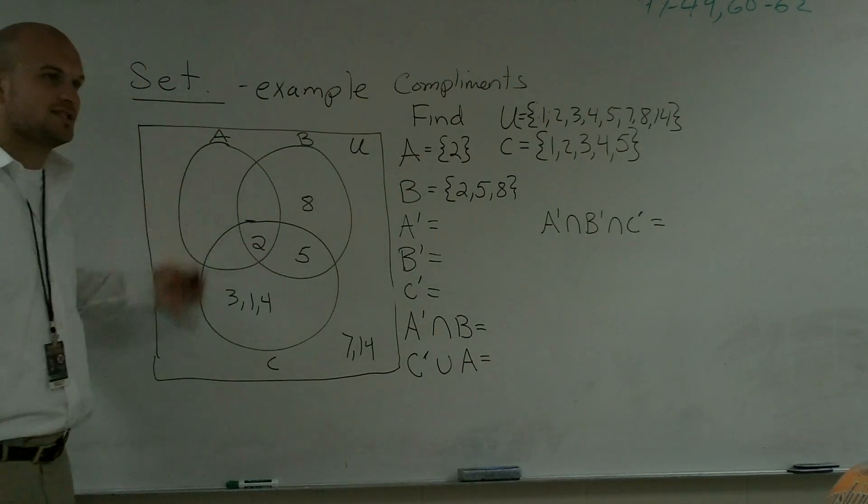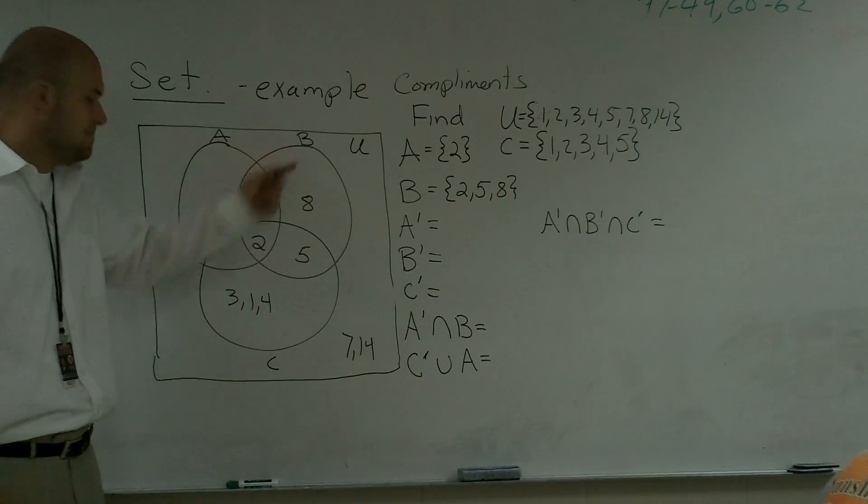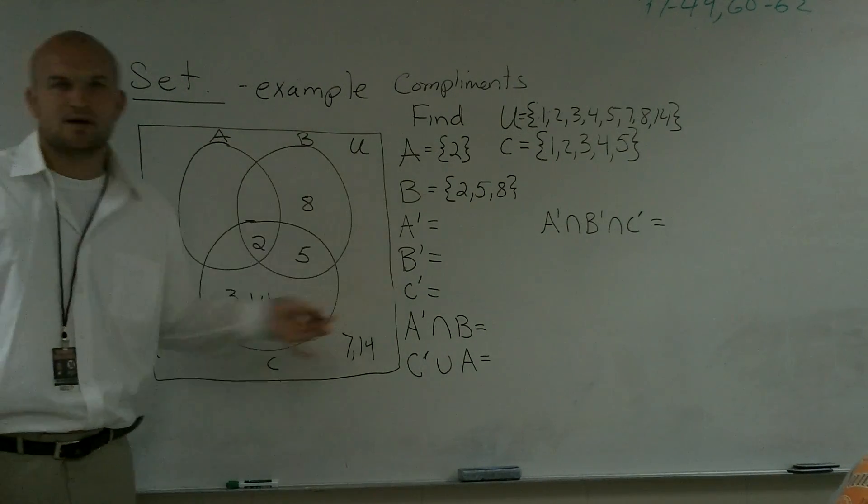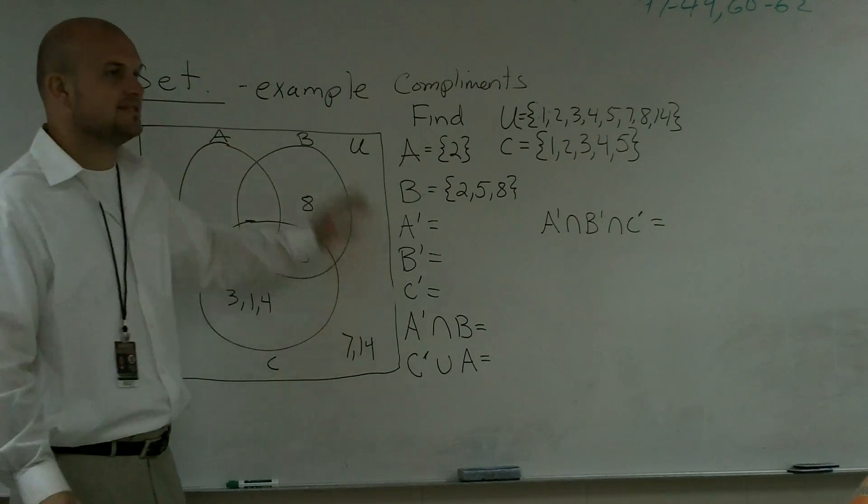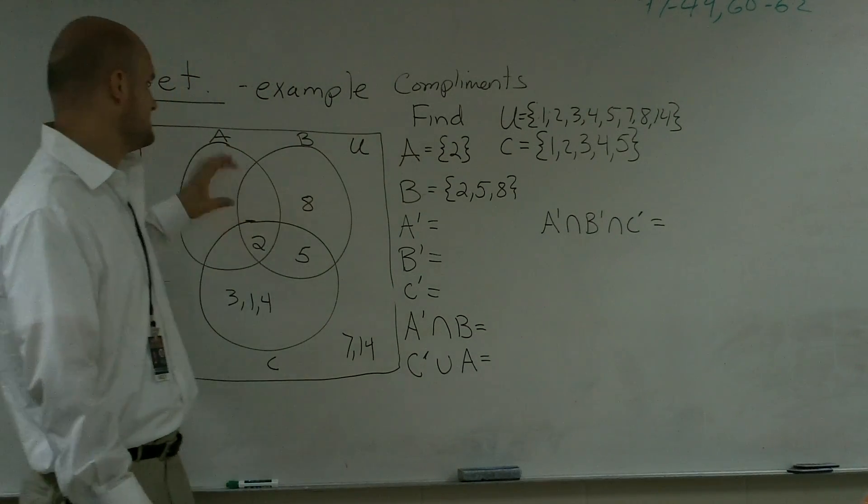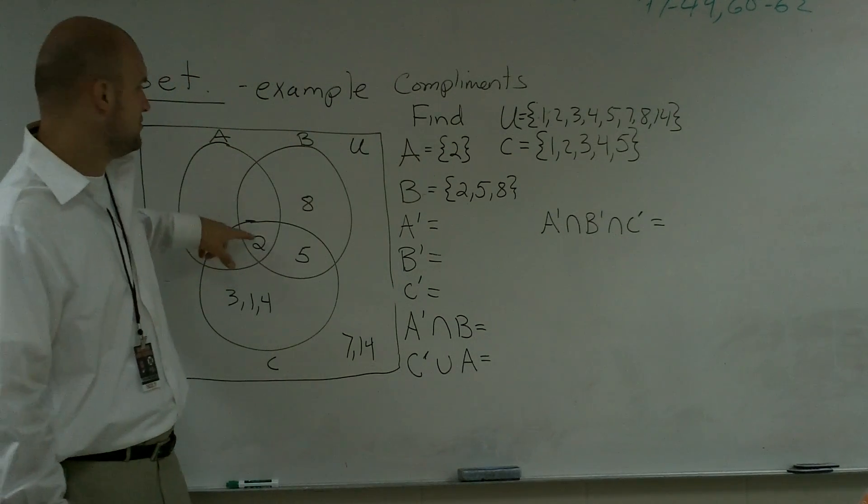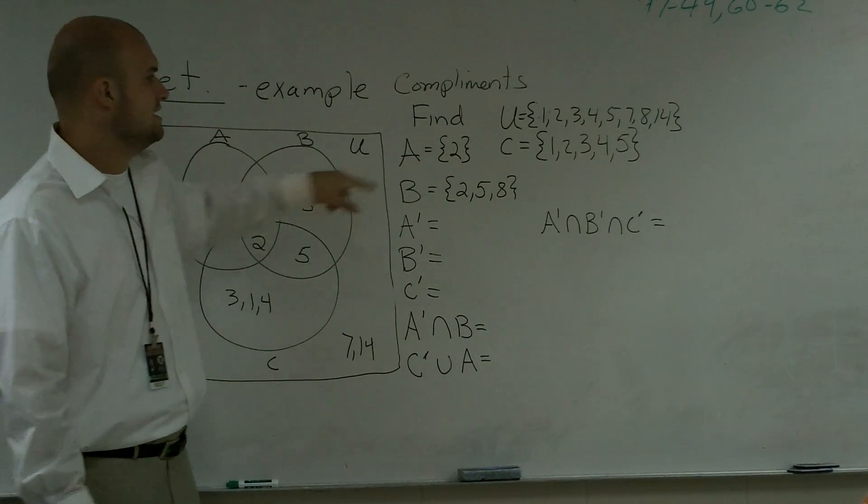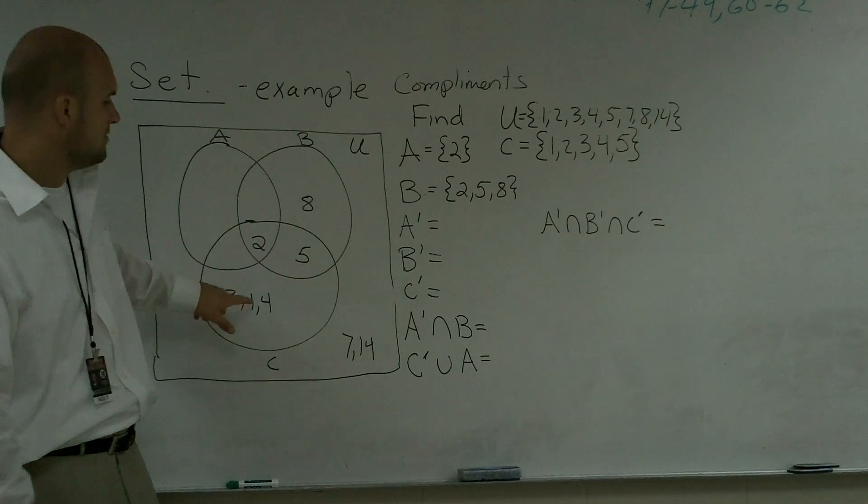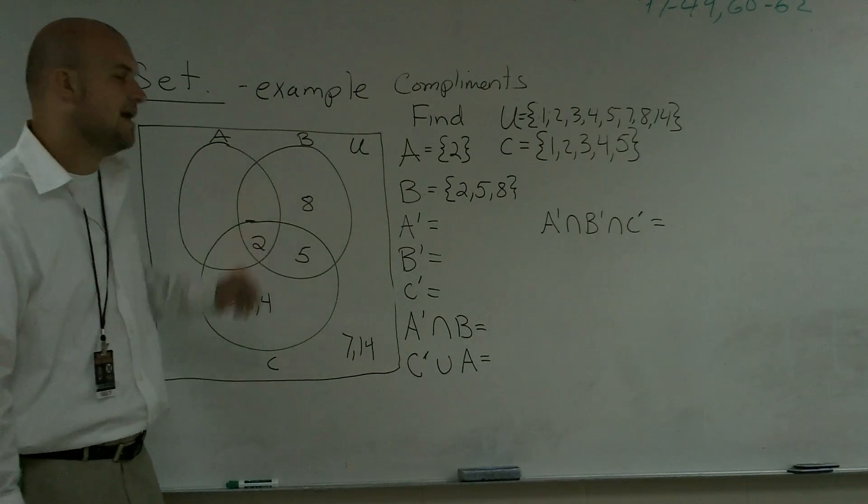So we have our original set notation again. We have our three sets, A, B, and C, just as in my previous videos. I have labeled the union set with all the numbers inside. A is my subset that just contains the element 2. B is another subset that contains the elements 2, 5, and 8. And C is my third subset that contains the elements 1, 2, 3, 4, and 5.